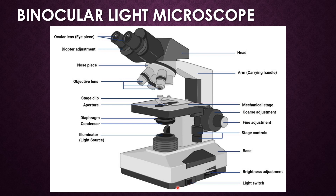The next part is the brightness adjustment, which is present near the light switch and helps in adjusting the brightness of the light in the microscope. The next part is the illuminator, or light source, which is located below the specimen. Above the illuminator, the condenser is present, which focuses the light through the specimen.